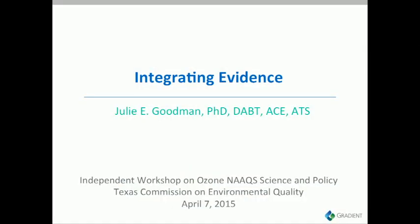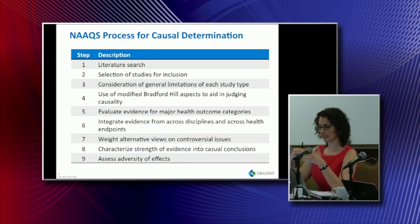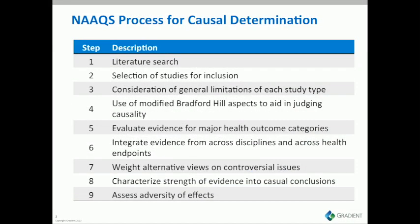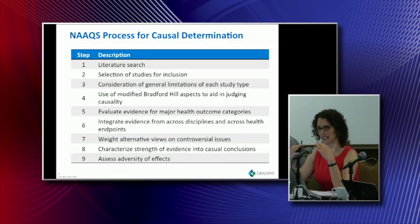I want to mention that it's not equal from 0 to 10 and 40 to 50 because it's not on a linear scale — it's on a log scale, so it's proportional not equal. Now: EPA's process for integrating evidence. EPA has a framework — in theory it's good, but there are a lot of places where there isn't sufficient detail. It involves a literature search, selecting studies to evaluate, using what they call the modified Bradford Hill aspects to aid in judging causality, integrating evidence from different realms like toxicology, epi, and controlled exposure, and weighing alternative views on controversial issues — though I don't really see that being done consistently.